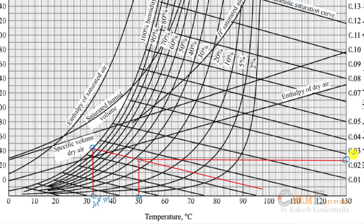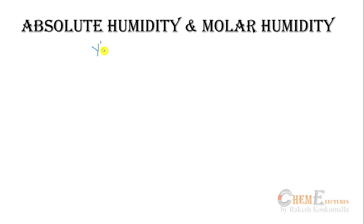From the curve, the absolute humidity reads as 0.024 — since this is 0.02 and this is 0.03, with 0.025 in between, it is just below 0.025, so I take it as 0.024 kg of water per kg of dry air. The second quantity to find is molar humidity.